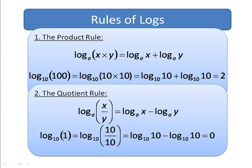My example is very simple. Log of one is the same as log of 10 divided by 10. This is equal to log 10 minus log 10, so that's zero, because log to the base 10 of 10 is 1, so 1 minus 1 is zero. I'm just using very trivial examples here to illustrate how it works.